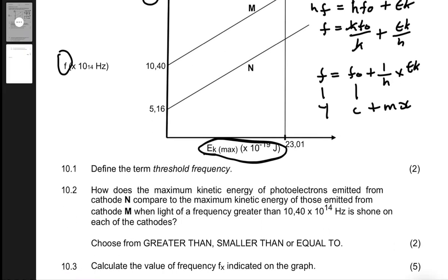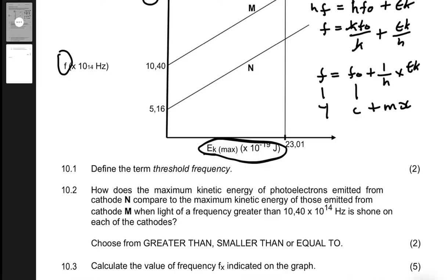Question 10.1 says: define the term threshold frequency. The threshold frequency is the minimum frequency of light needed to eject electrons from a metal surface.